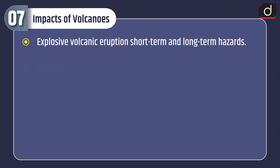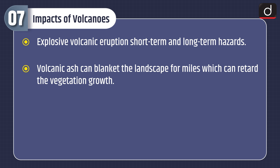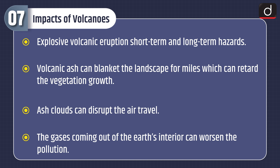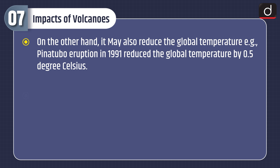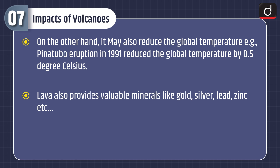Now moving on to impacts of volcanoes. Explosive volcanic eruptions pose both short-term and long-term hazards. Volcanic ash can blanket the landscape for miles, which can retard vegetation growth. Ash clouds can disrupt air travel. The gases coming out of the Earth's interior can worsen pollution. On the other hand, it may also reduce global temperature — for example, the Pinatubo eruption in 1991 reduced the global temperature by 0.5 degrees Celsius. Lava also provides valuable minerals like gold, silver, lead, zinc etc.